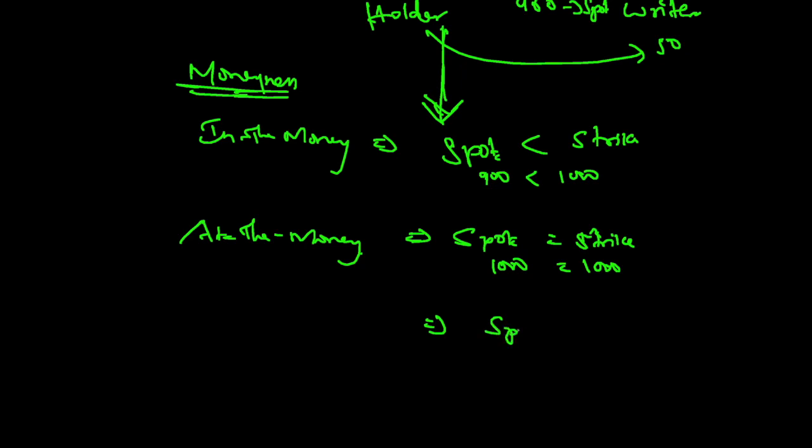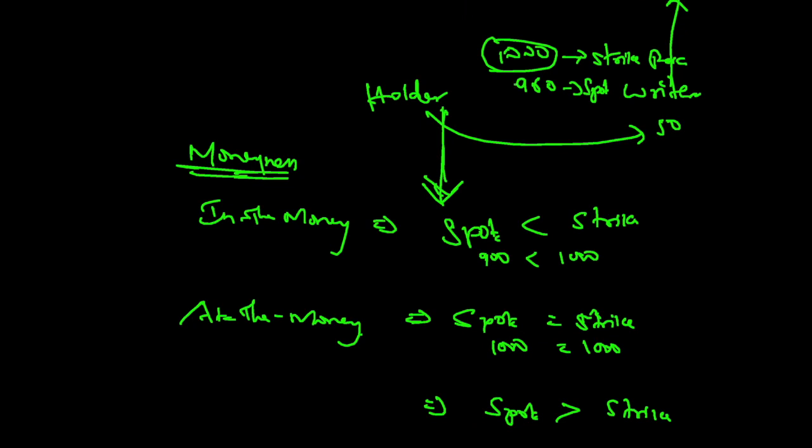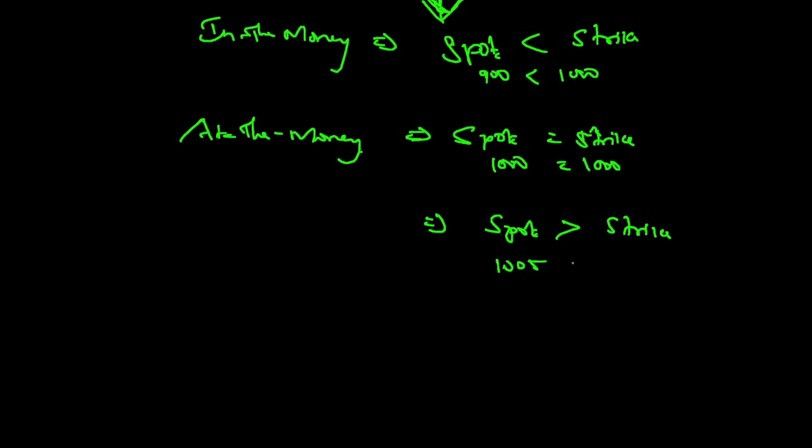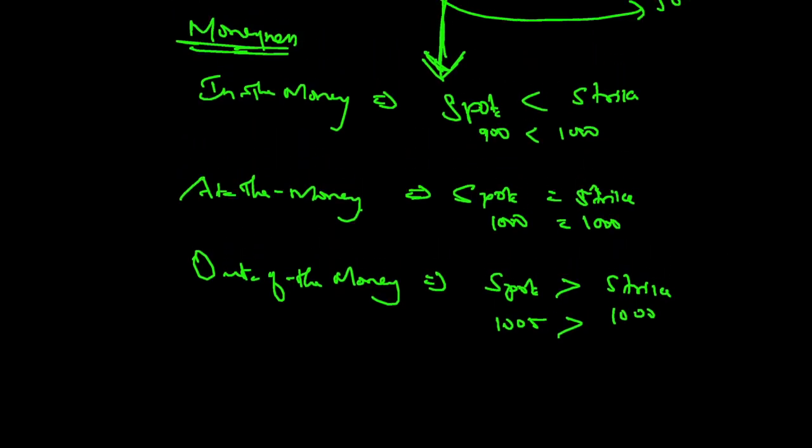Now here, when your spot price is greater than the strike, for example imagine it is 1005. In this case, you wanted the price to come down, whereas the spot price has gone up. So you are out-of-the-money. Spot price is 1005, greater than 1000. You are out-of-the-money.